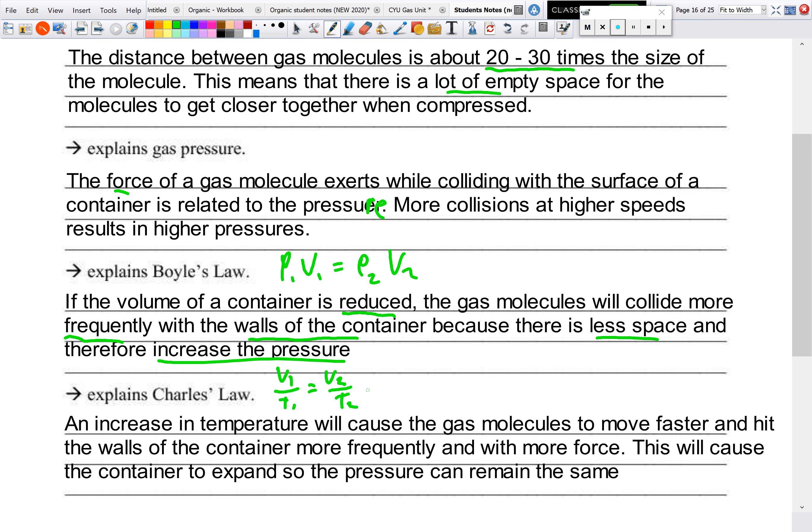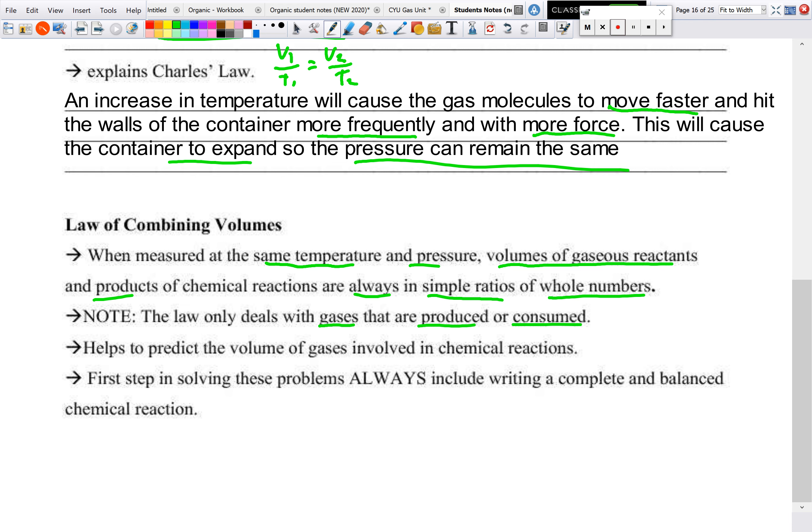So next we're just going to jump right into the law of combining volumes. So what this is, is that when measured at the same temperature and pressure, volumes of gases, gaseous reagents and products of a chemical reaction are always in simple ratios of whole numbers. We can only use this with gases that are produced or consumed and it helps predict the volume of gases involved in a chemical reaction. So our first step is always writing out our complete balanced chemical reaction. So back almost February now, or even January when we first started Chem 20, we looked at the five different types of chemical reactions. So these are going to come back again because we will need to be re-familiarized with them.